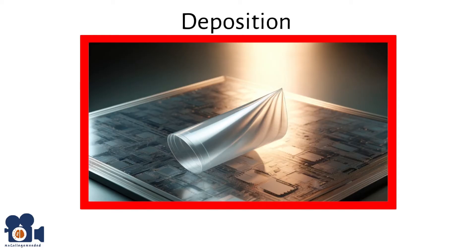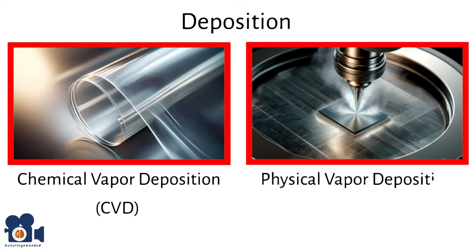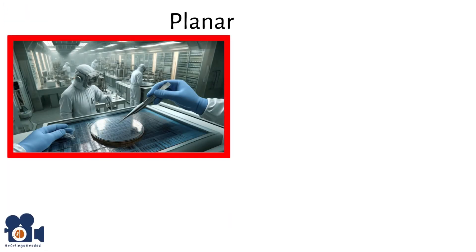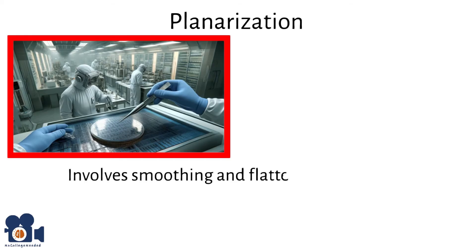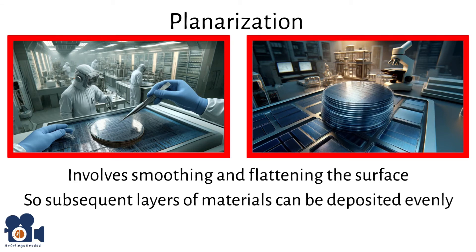Deposition is achieved through various processes. Chemical vapor deposition involves depositing thin films of materials onto the wafer's surface and is used to create layers such as silicon nitride or silicon dioxide. Physical vapor deposition (PVD) uses techniques like sputtering or evaporation to deposit thin metal films onto the wafer. After deposition is planarization, which involves smoothing and flattening the surface of the wafer, ensuring that subsequent layers of materials can be deposited evenly, which is critical for device performance and reliability.